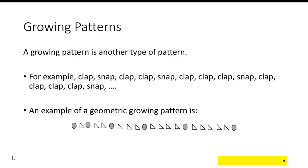Another example would be this geometric growing pattern you see here, where between an oval, then a triangle, oval, then two triangles, an oval, then three triangles, and so on.